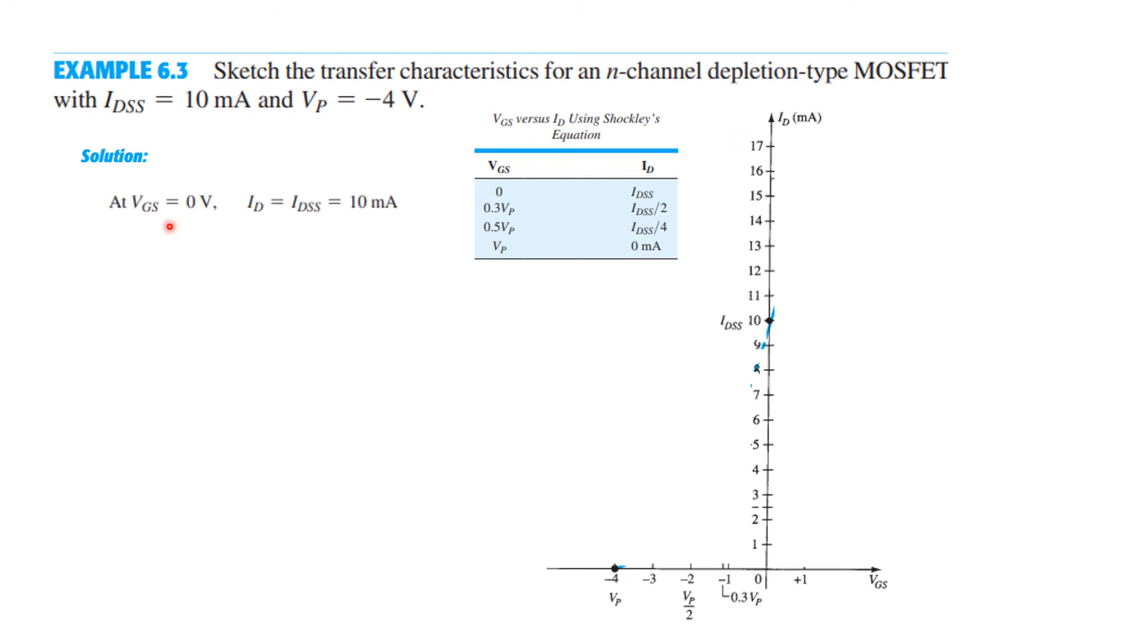And first point we identify is the IDSS 10mA, so 10mA when VGS is 0. So this is VGS 0 and this will identify the 10mA point which is IDSS.